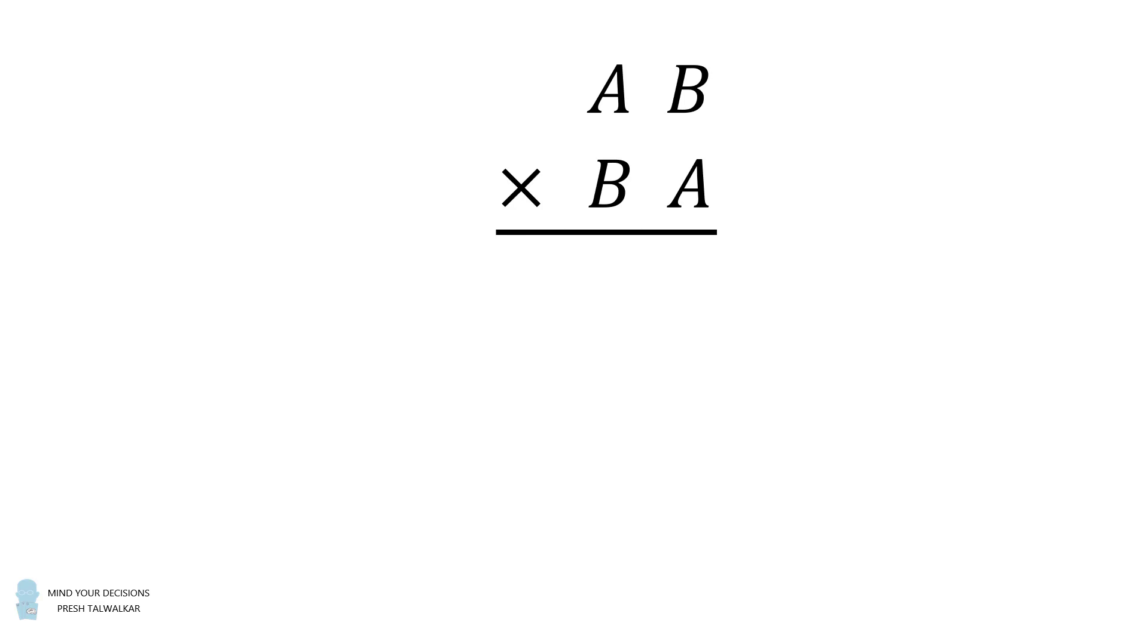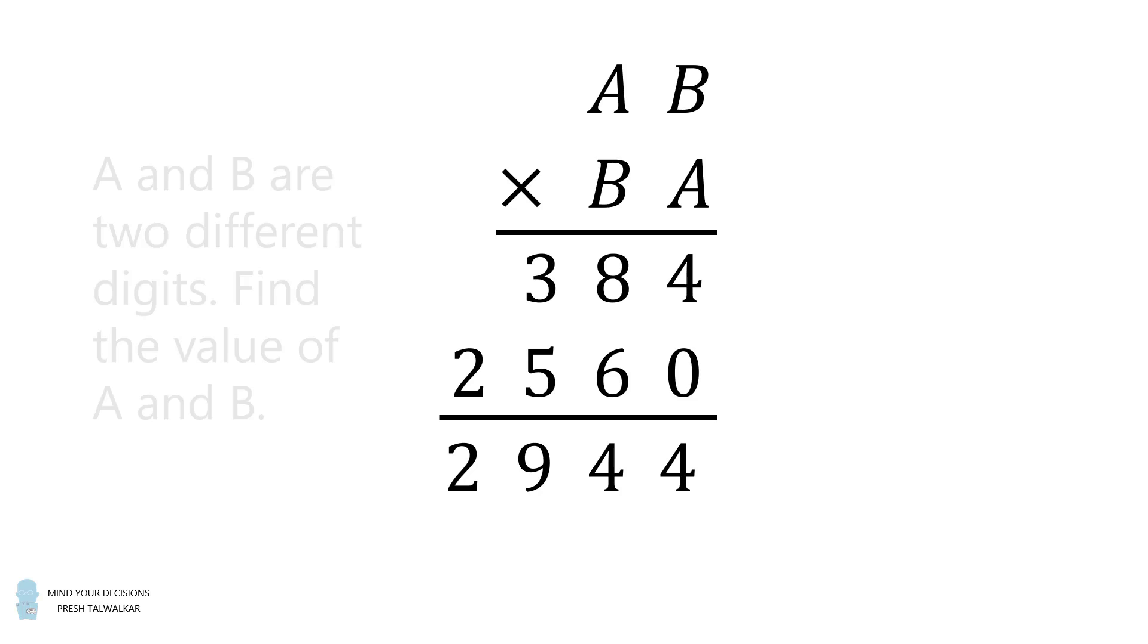The calculation for AB multiplied by BA has the first row equal to 384, the second row equal to 2,560. The sum of these is equal to the product and that is 2,944. A and B are two different digits. Find the value of A and B.